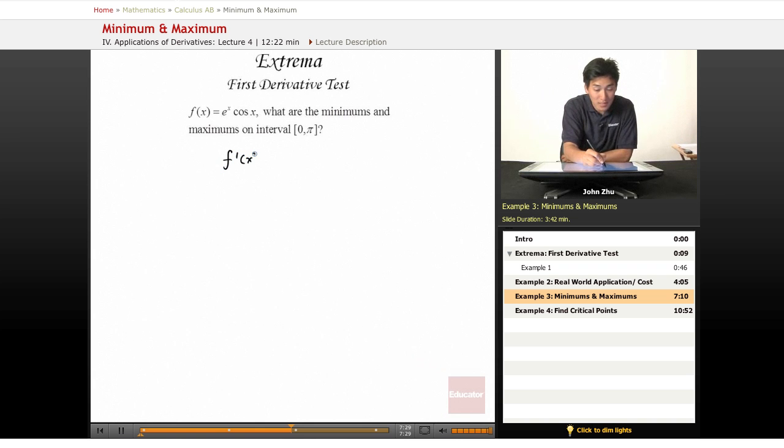f prime of x equals derivative of the first term, which is e to the x times cosine of x, plus derivative of the second term, negative sine of x times the first term. So if we simplify this a little bit, we get e to the x times cosine of x minus sine of x.